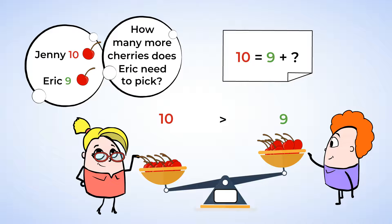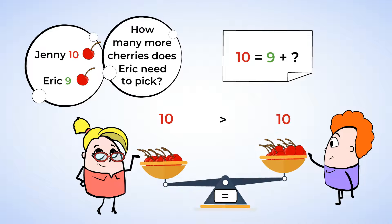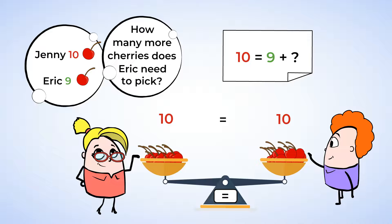Well, we can count up to ten by starting from nine. So nine, ten. Oh, there we go. Now there are ten cherries on both sides, which means the two sides are equal and balanced. Ten equals nine plus one. So Eric needs to pick one more cherry. Good job using the equal sign.